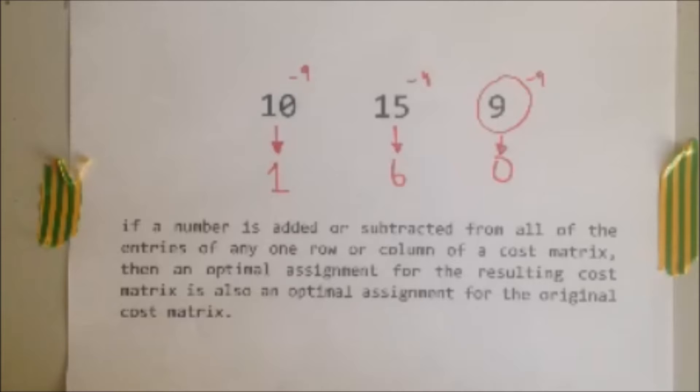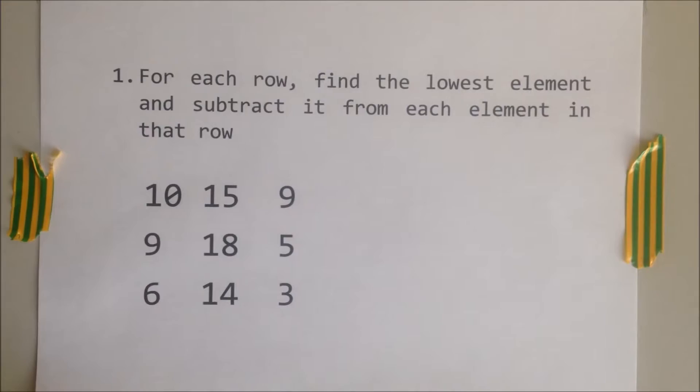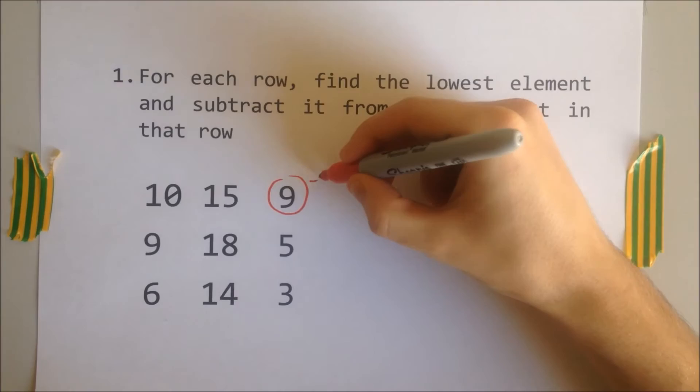The theory is, if a number is added or subtracted from all of the entries of any one row or column of a cost matrix, then an optimal assignment for the resulting cost matrix is also an optimal assignment for the original cost matrix. Using these fundamentals, we can now go on to the algorithm.